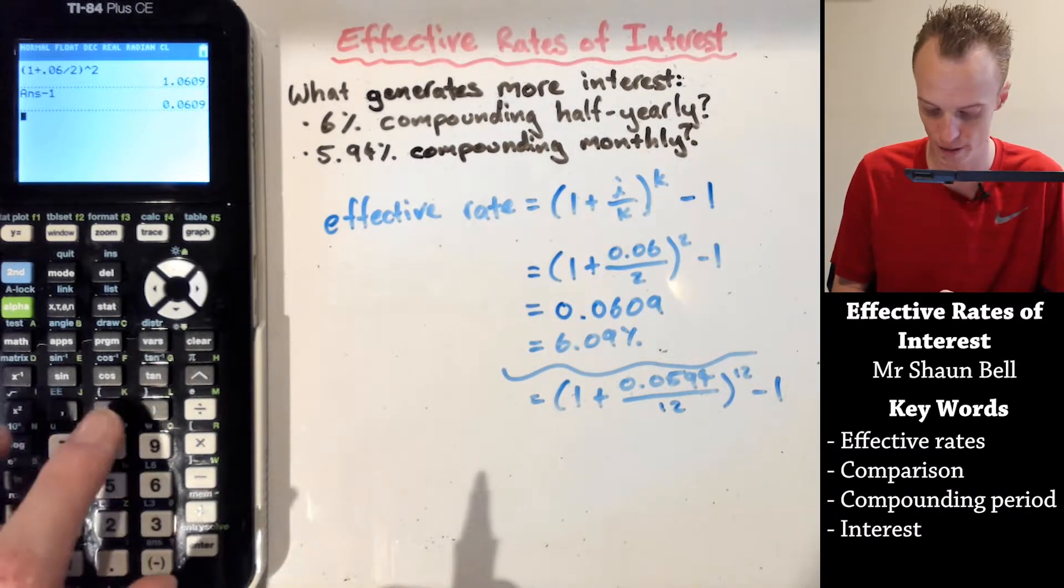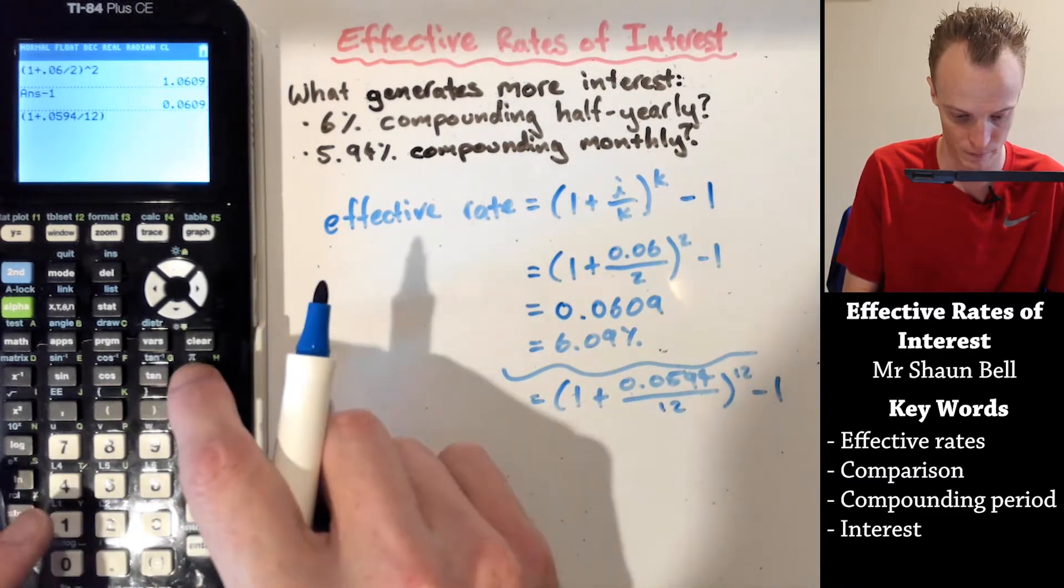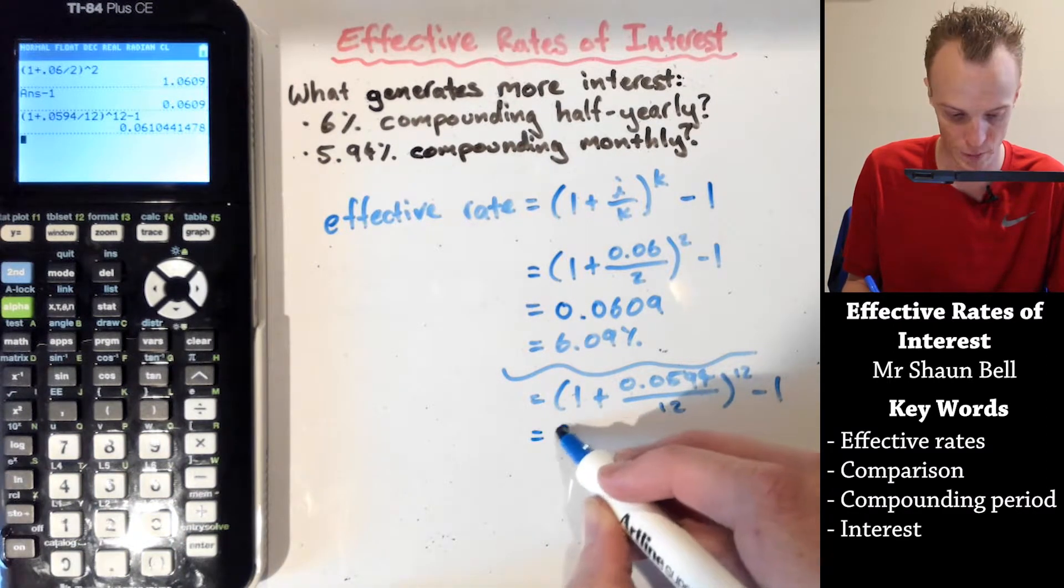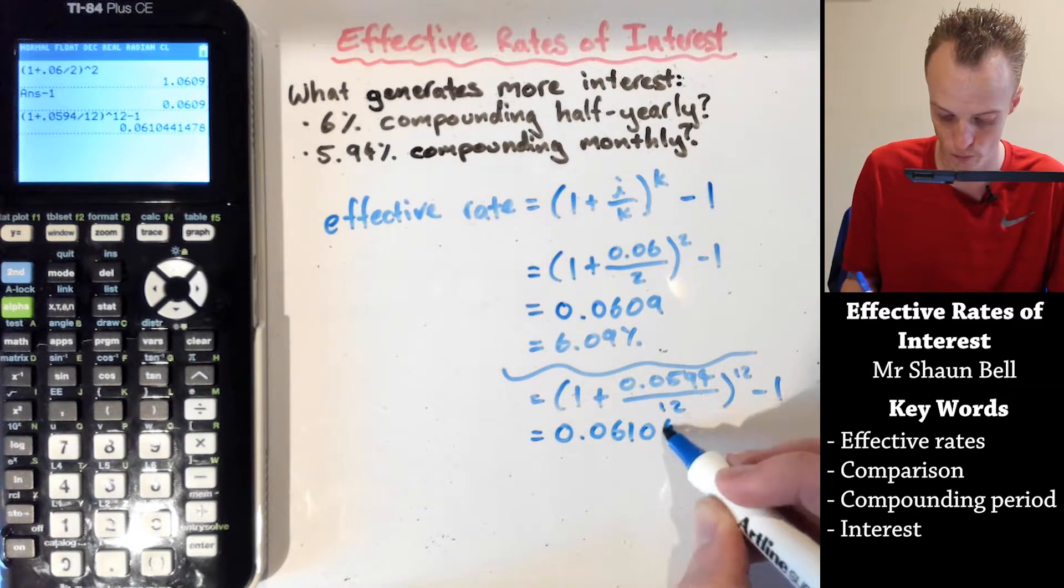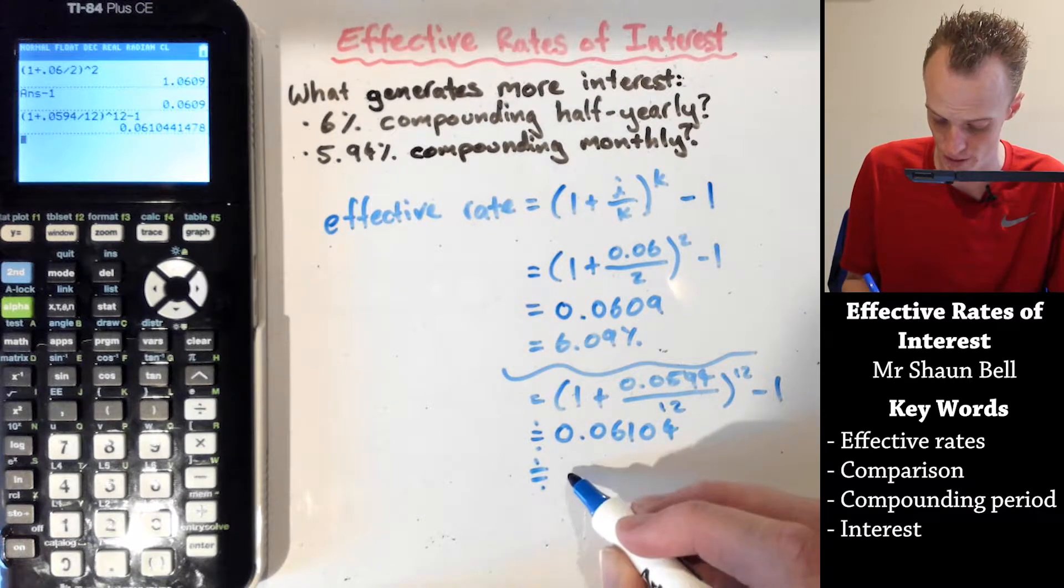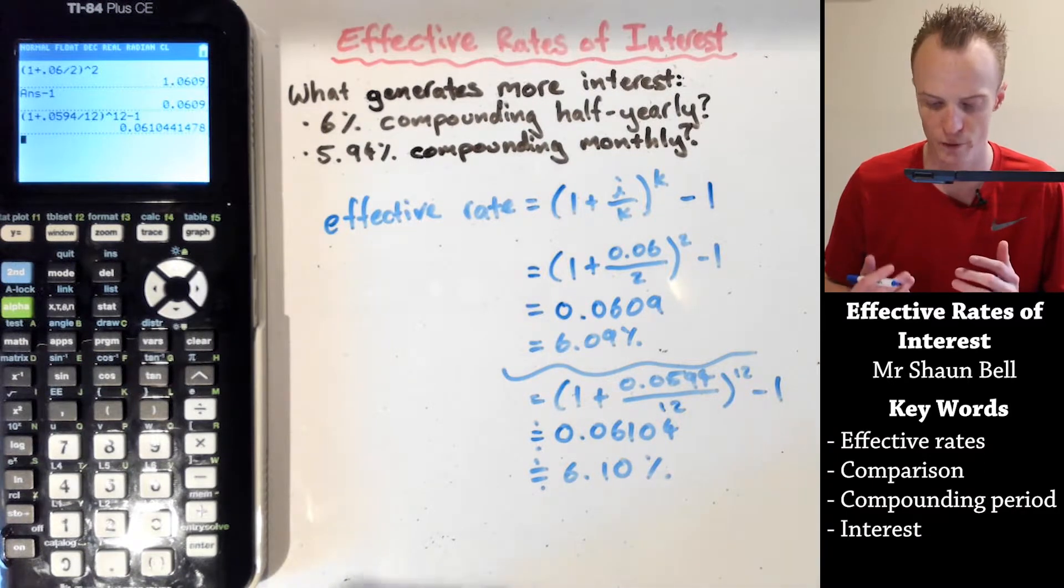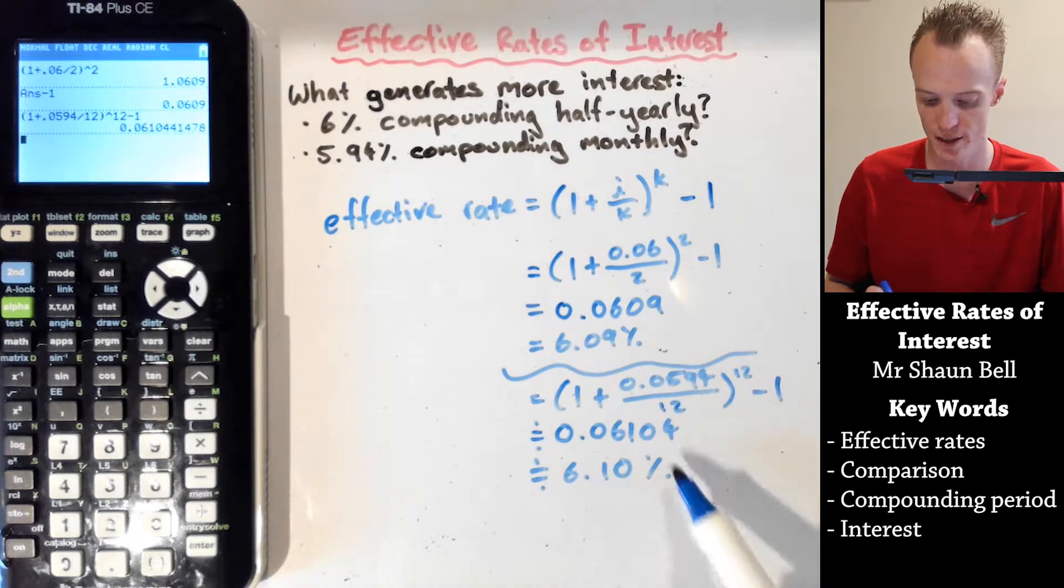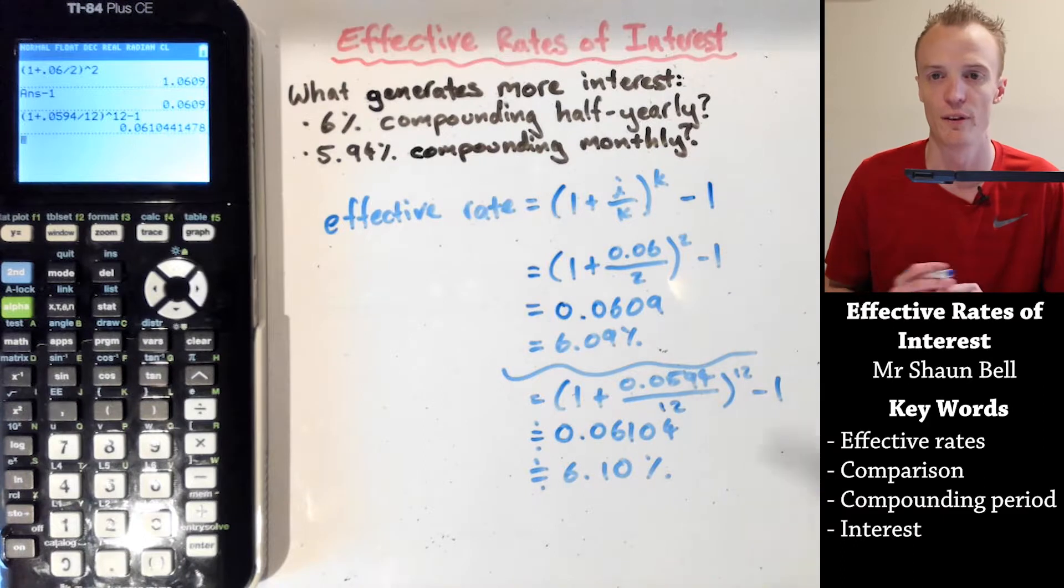If I put this into my calculator, I'd find that it equals approximately 0.06104, which is approximately 6.10%. So what I can find here by using an equation is that the second account has a more effective rate of interest than the first account.